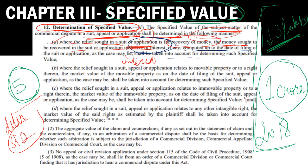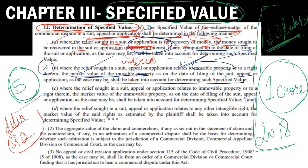Number two: where a suit, application, or appeal relates to movable property, or you are establishing any right over movable property, then the market value of that movable property on the date of filing of the suit, appeal, or application shall be considered. Even if the value was below 3 lakh before that date, if on the date of filing the market value is minimum 3 lakh, you can validly file it in commercial court. So the second determinant: for movable property, market value on the date of filing determines.